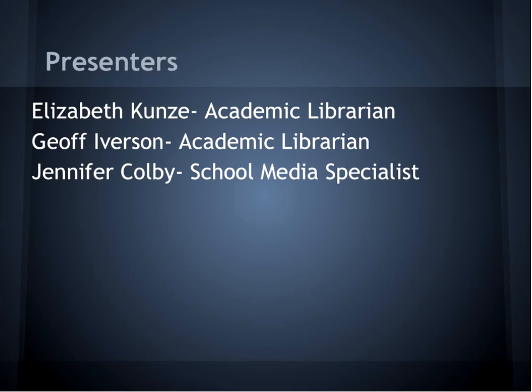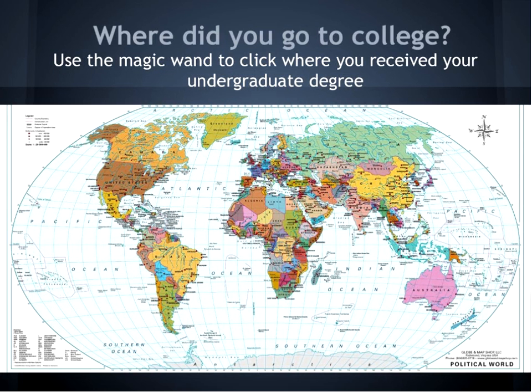You'll also note a vertical toolbar alongside the chat box. The second symbol from the top is the magic wand tool, which allows you to click on the screen and leave a mark where you've chosen to click. At this time, please click on the magic wand tool to indicate on the map where you received your undergraduate degree so that we can make sure everybody can hear and see properly.